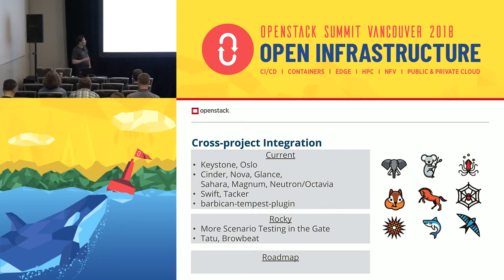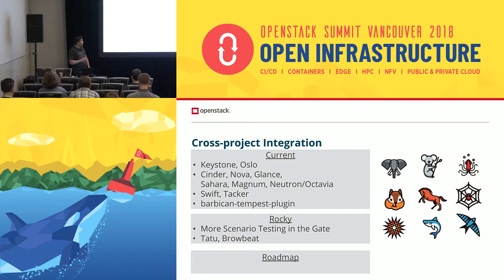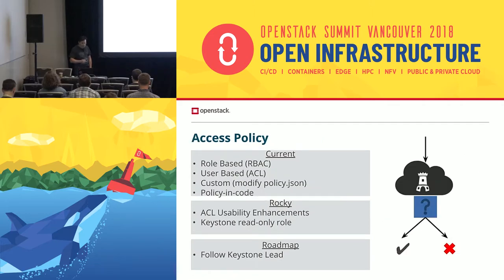In Rocky there's more scenario testing at the gate, adding more use cases. There was a talk on Tattoo — which is SSH as a service — now using Barbican to store secrets. There's also more work ongoing with Browbeat for performance testing on Barbican, so there'll be things for Browbeat and Rally to make sure we have what we need to test the various use cases within Barbican.